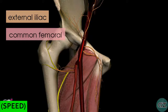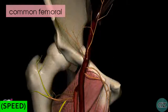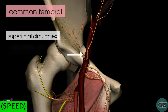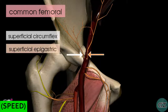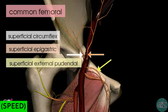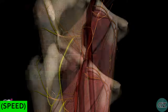The common femoral artery enters the femoral triangle and it gives off four branches. You can see these four branches here: the first one is the superficial circumflex branch, this one is the superficial epigastric branch, and then we've got the superficial external pudendal and the deep external pudendal arteries.